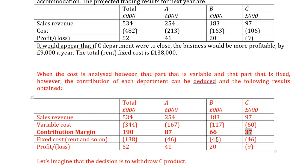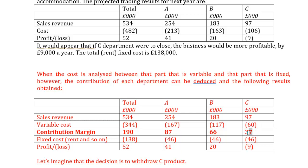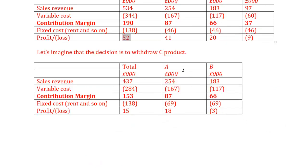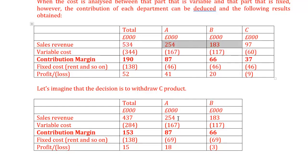If the contribution margin of C is positive, I will continue producing it. Why? Because the £37 from C is used to cover fixed costs. If we decide not to produce C, we lose that £37. Let's verify: if we produce only A and B, the fixed cost of £138 is now split between just two products — £69 each. Total profit drops to £15. So profit decreased by £37 — exactly the contribution margin we lost from C.